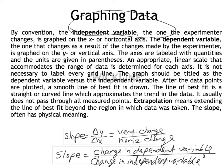Extrapolation is when you extend the line of best fit beyond the region in which data was taken. For example, if your lowest data value is at coordinate (1, 1) and you take your line down to the origin (0, 0), you've extrapolated. This is appropriate if a question asks you to predict a data point that hasn't been directly measured, but if you're just asked to graph data, extrapolation is unnecessary — only do it if you've determined you really need to.